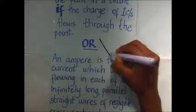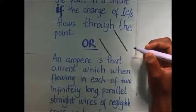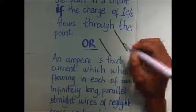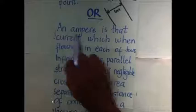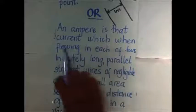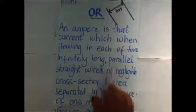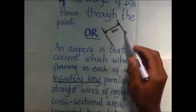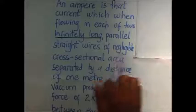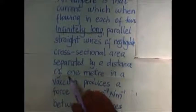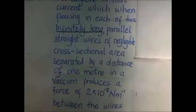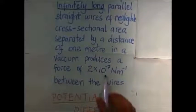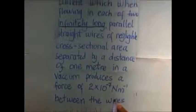There is another version of the definition for an ampere. You have two wires — these two wires must be infinitely long and have negligible cross-sectional area, with a distance of one meter between them. An ampere is that current which, when flowing in each of two infinitely long, parallel, straight wires of negligible cross-sectional area, separated by one meter in a vacuum, produces a force of 2×10⁻⁷ Newtons per meter between the wires.